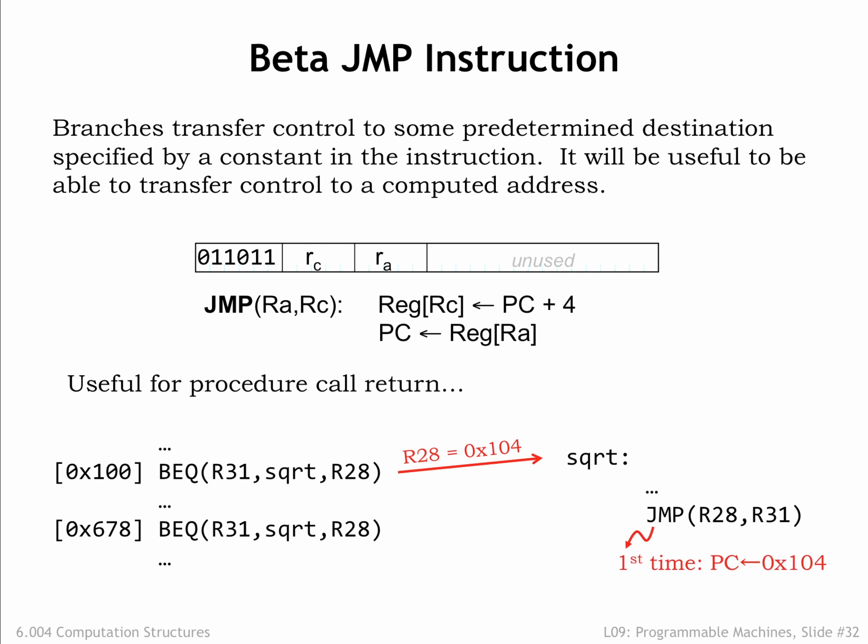When we reach the end of the first procedure call, the JUMP instruction loads the value in R28, which is 0x104, into the PC, so execution continues with the instruction following the first BEQ. So we've managed to return from the procedure and continue execution where we left off in the main program.